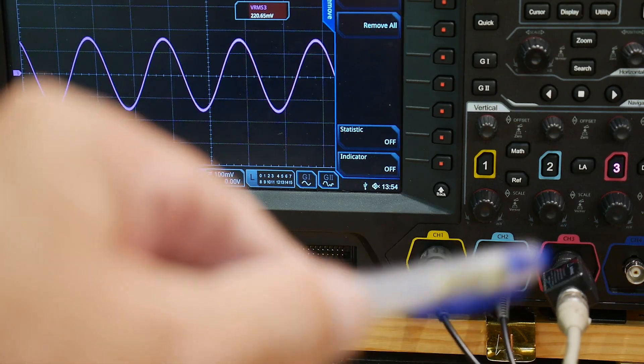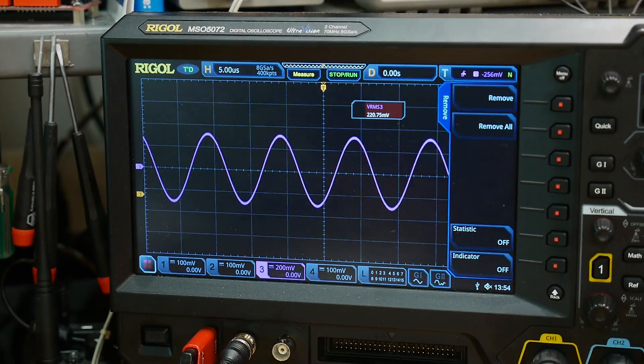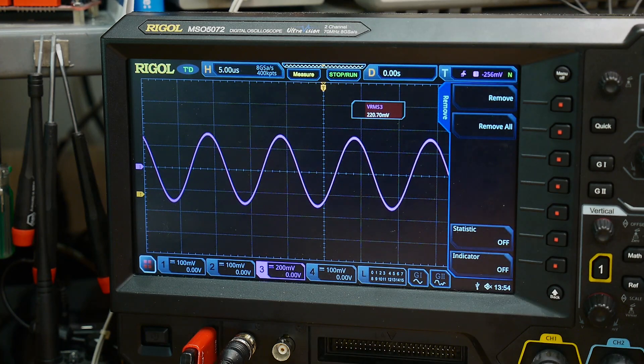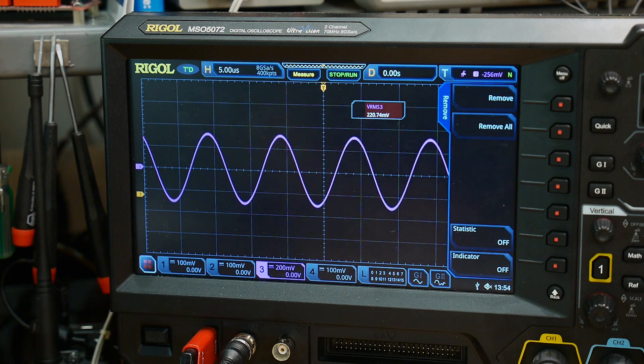We're coming in on channel three with a 50 ohm load. And we are measuring volts RMS. And we are measuring 0.220 volts RMS. Guess what? We get to do some math. Everybody loves math.